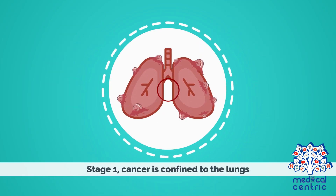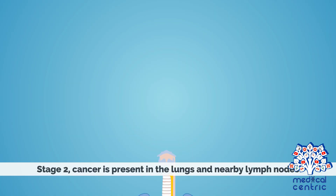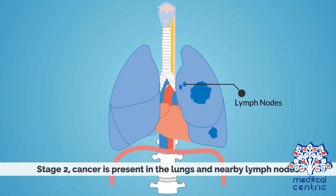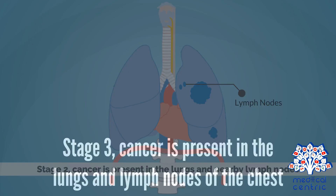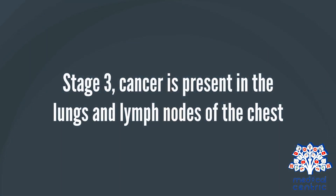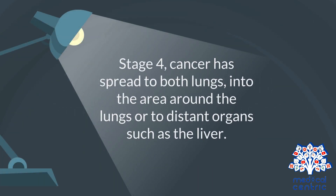Stage 1: Cancer is confined to the lungs. Stage 2: Cancer is present in the lungs and nearby lymph nodes. Stage 3: Cancer is present in the lungs and lymph nodes of the chest. Stage 4: Cancer has spread to both lungs, into the area around the lungs, or to distant organs such as the liver.